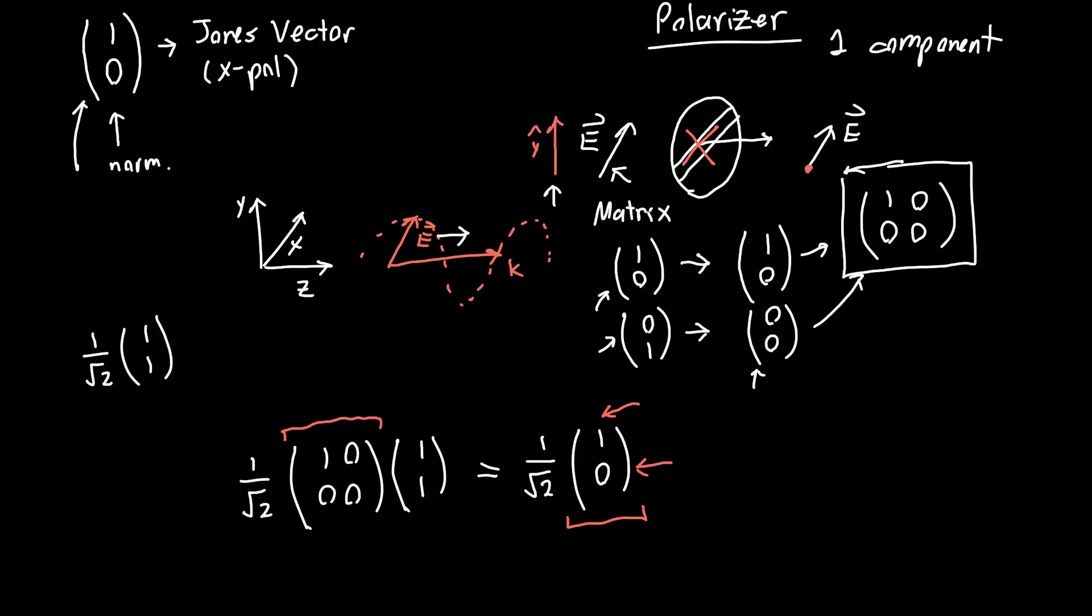But now we have a matrix representation, so we can figure out how it behaves when we send in any polarization state of light.